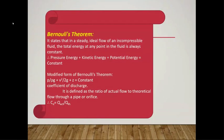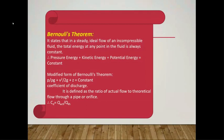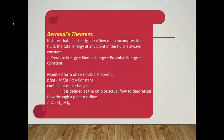Bernoulli's theorem states that in the steady ideal flow of an incompressible fluid, the total energy at any point in the fluid is always constant — that is, pressure energy plus kinetic energy plus potential energy equals constant. The modified form of Bernoulli's theorem is: P/ρg + V²/2g + z = constant, which is pressure head plus velocity head plus elevation head equals constant. The coefficient of discharge is the ratio of actual flow to the theoretical flow through a pipe.